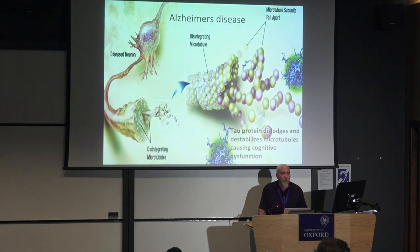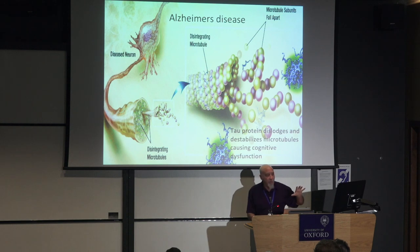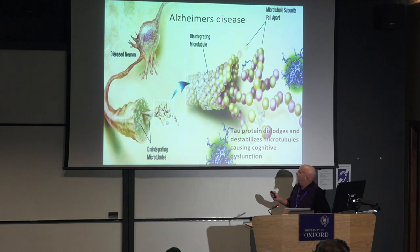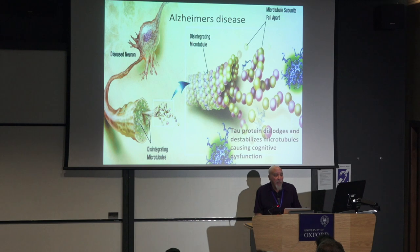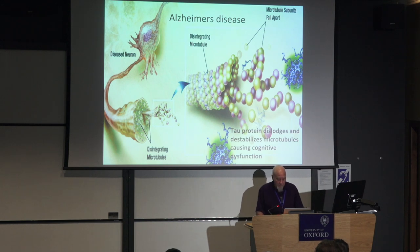A little bit about microtubules. If they fall apart, you get Alzheimer's disease. Alzheimer's has two types of lesions: amyloid plaques outside the neurons, and the lesion that causes cognitive dysfunction from inside the neurons, where microtubules have this protein called tau. When tau is on the microtubule, it stabilizes it. But when it falls off, the microtubule destabilizes and disassembles, and you lose synapses, neuronal function, and memory and cognitive function.